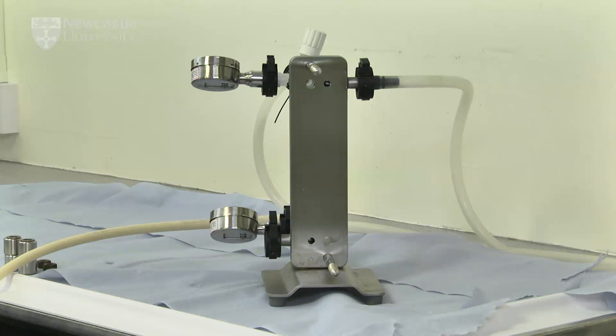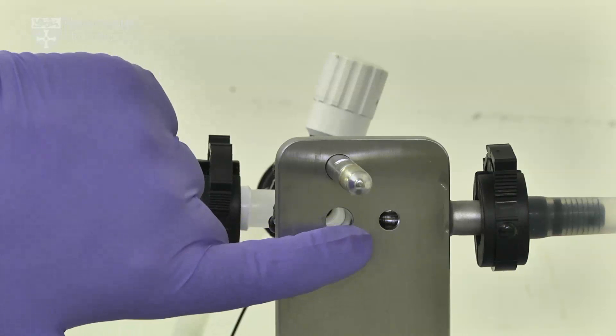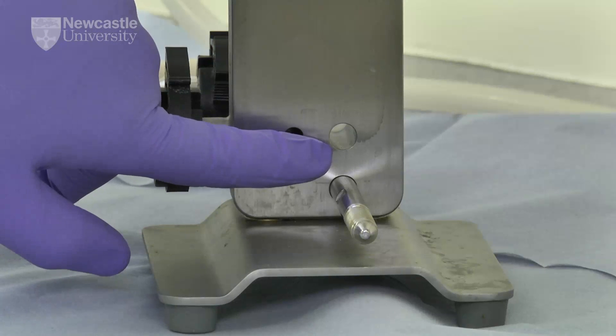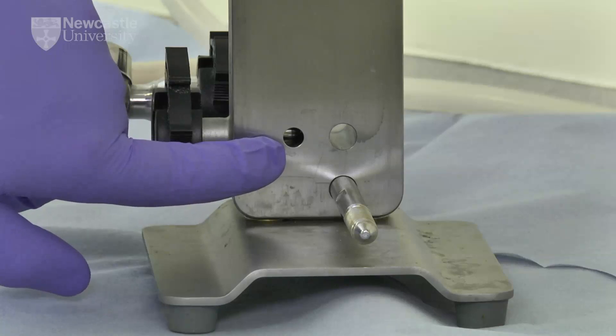This is the manifold plate. The retentate is collected from this port. The permeate is collected from this port. The feed enters the cassette through this port. And the final port allows for the addition of a permeate pressure gauge.